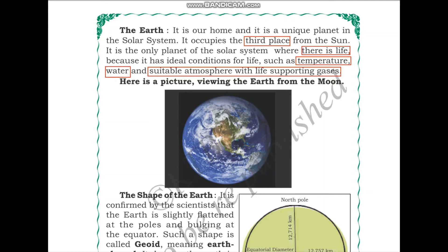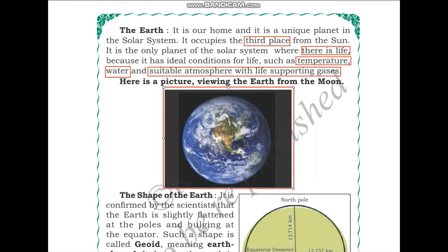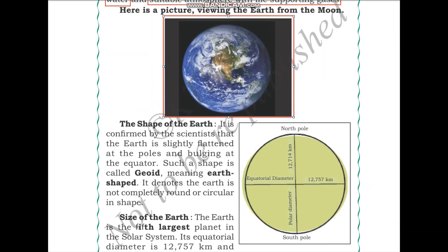We also need a suitable atmosphere with life-supporting gases like oxygen for respiration. The Earth has all these conditions. Here is a picture of the Earth taken from the moon, and another image showing the Earth rotating. We will learn more about the rotation of the Earth and how it causes day and night in the next part of this lesson.